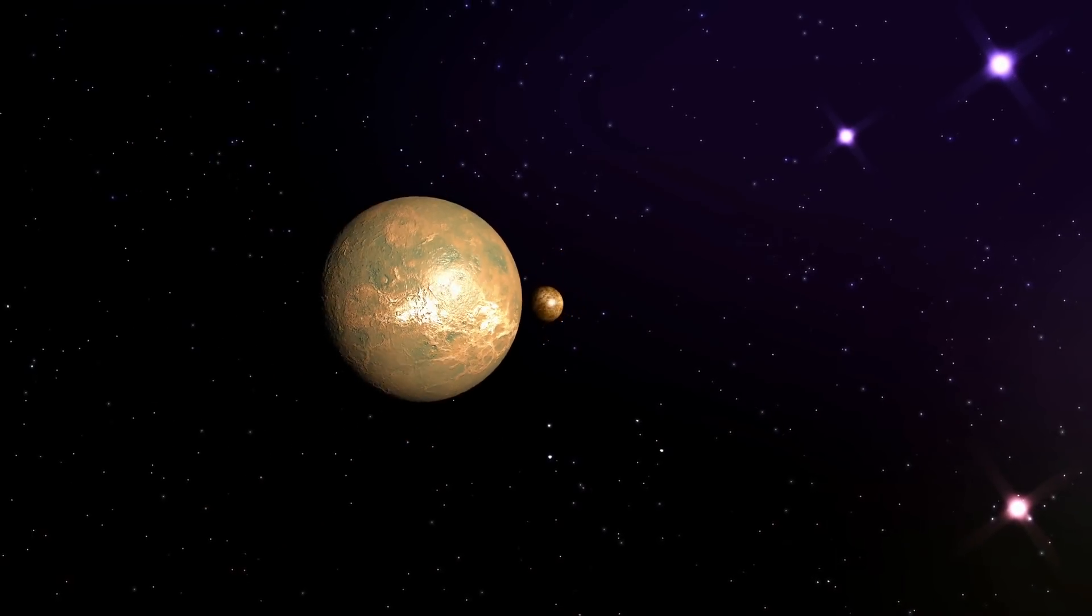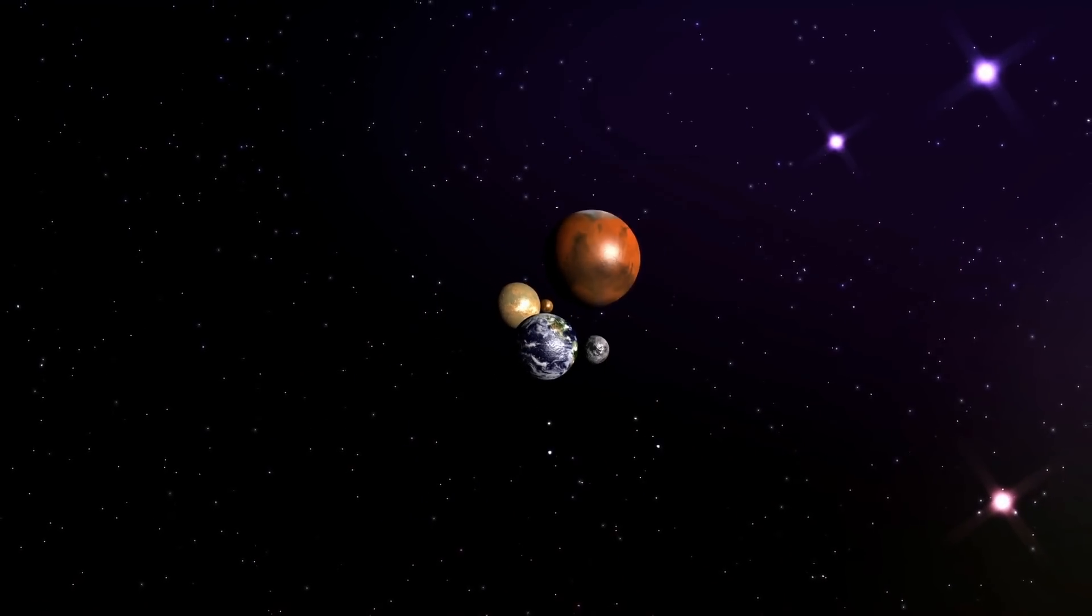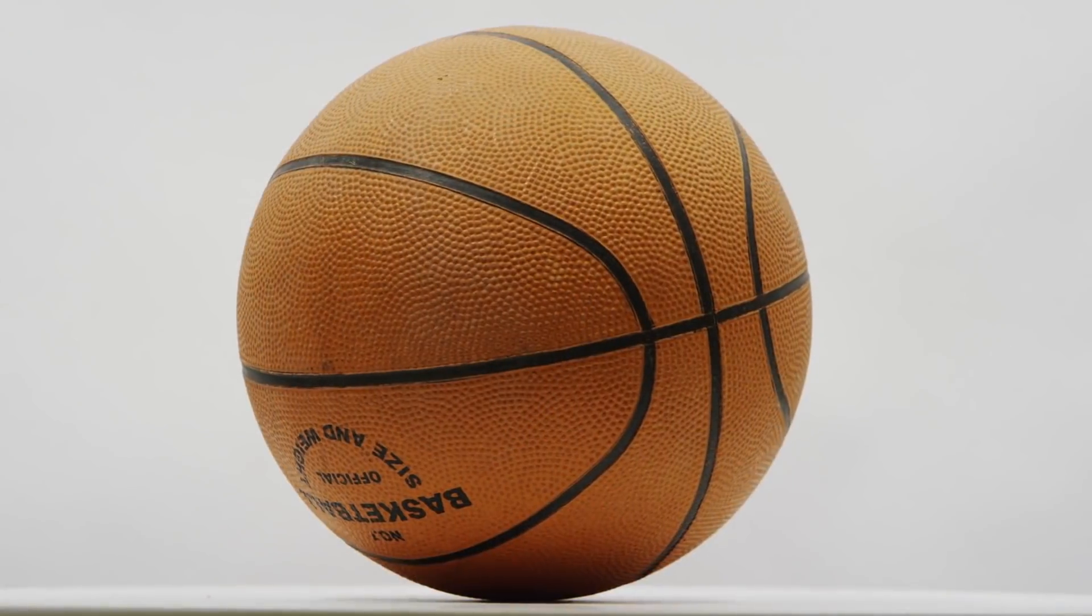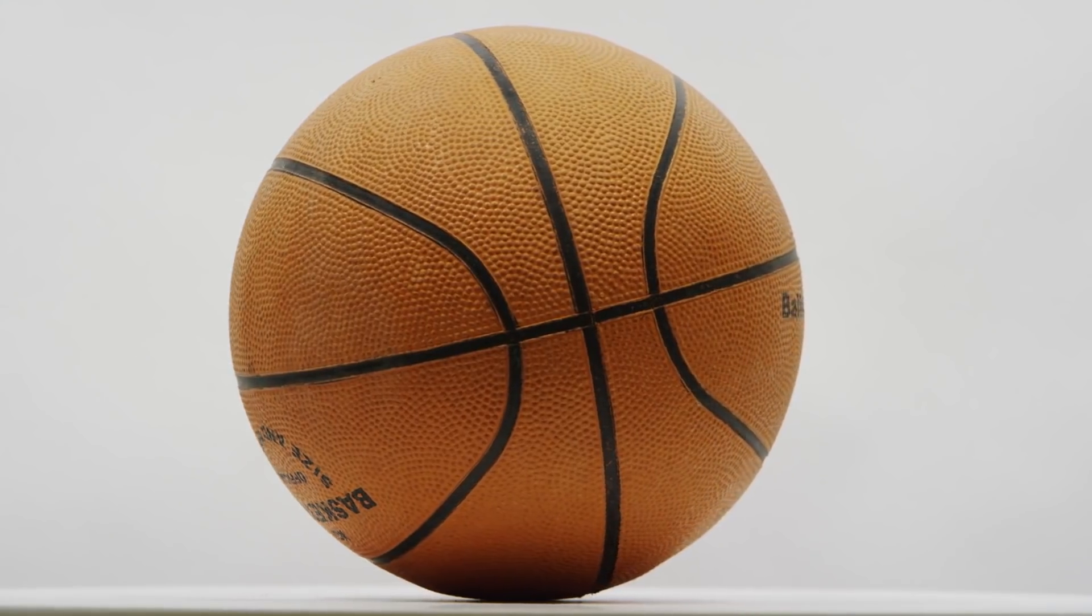While we can imagine the other planets in the solar system like slightly inclined spinning tops, Uranus resembles in its rotational motion rather a ball rolling in a circular path over the ground.